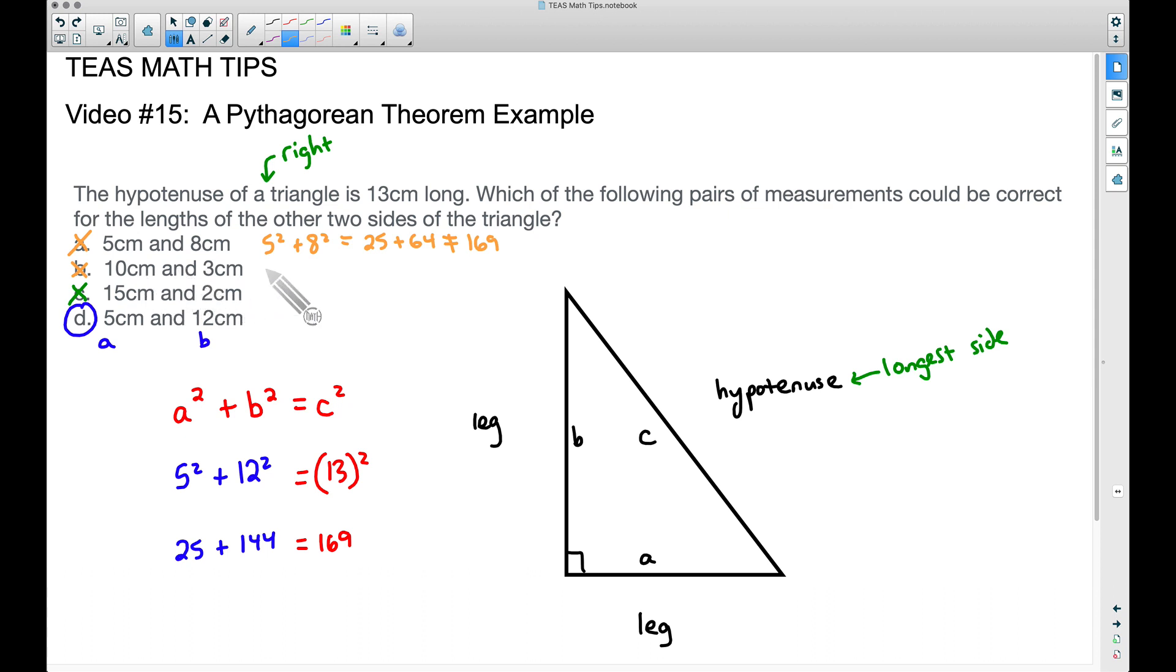Same thing down here with letter B. If we take A squared, that's going to be 10 squared, plus 3 squared. This is going to be, what, 100 plus 9, 10 squared plus 3 squared. And that is not equal to 169 either.